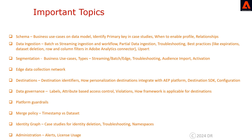The last topic is administration. You need to understand alerts for streaming and batch sources — not all alerts are applicable for streaming sources. Know which alerts apply to batch sources and which to streaming sources. You should also understand the concepts of profile richness and addressable audience, along with the best practices around them.